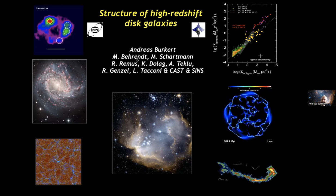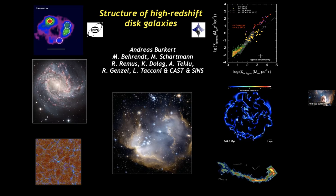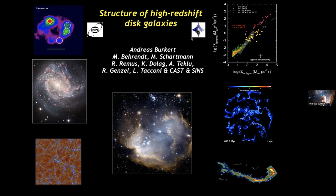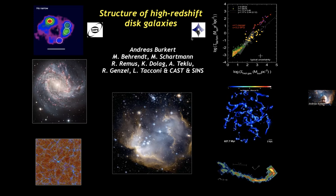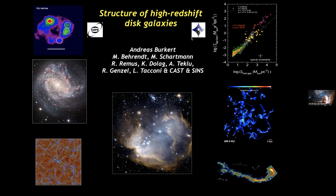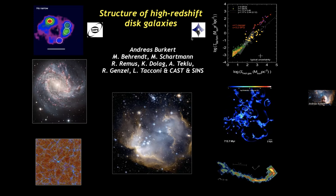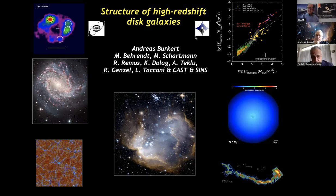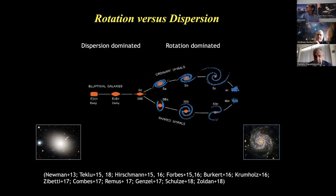This is Manuel Behrendt, Mark Schartmann, Leah Remus, Klaus Dulac, and so on. We are located at the University Observatory, but I have a joint position also at MPE, and we work closely together with Reinhard on the observations of high redshift galaxies. I would like to motivate this with the Hubble sequence, which summarizes the structures of galaxies.